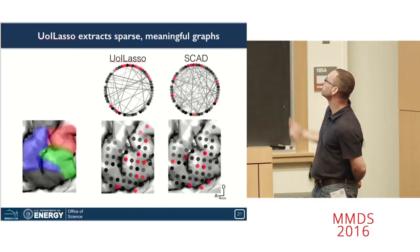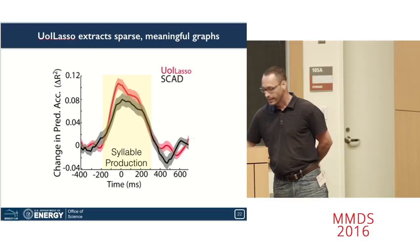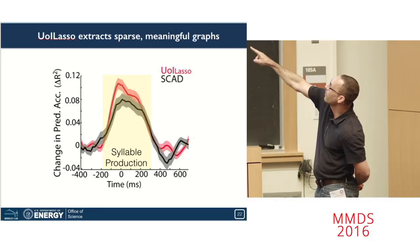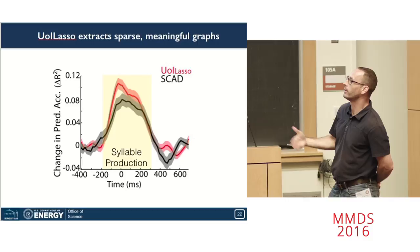In contrast, the graph formed using SCAD just simply did not have those methods, or did not have those properties. The connectivity matrix was relatively dense, and it did not have physically meaningful structure. Here, we're just looking at the prediction accuracy on average for the different methods. And the only thing to point out is that our method, UoI Lasso, had increased prediction accuracy during the relevant period indicated in yellow over the other method, despite having five or six times less parameters.